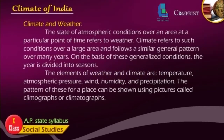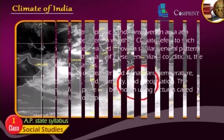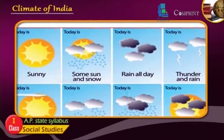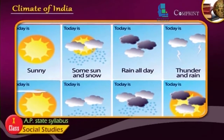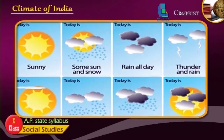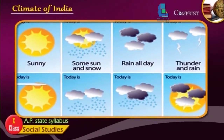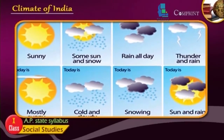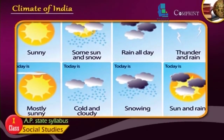The state of atmospheric conditions over an area at a particular point of time refers to weather. Climate refers to such conditions over a large area and follows a similar general pattern over many years. On the basis of these generalized conditions, the year is divided into seasons.